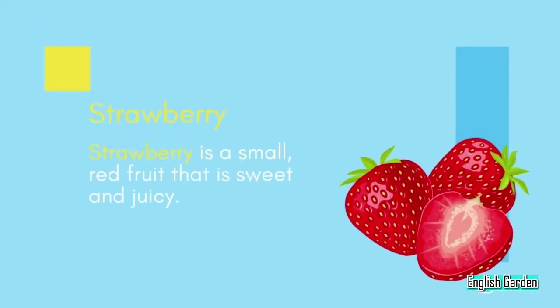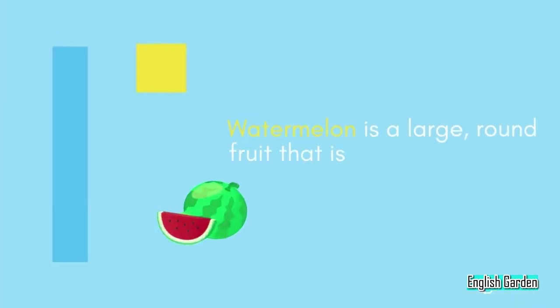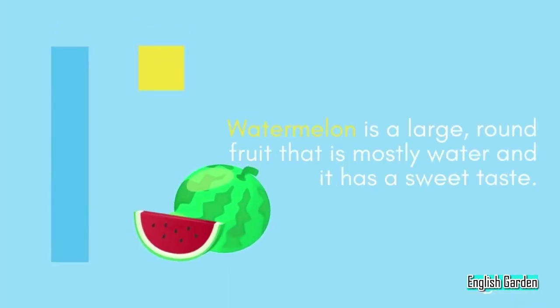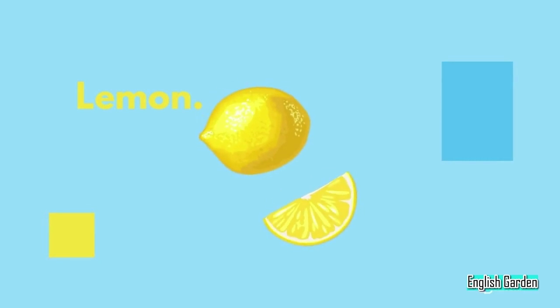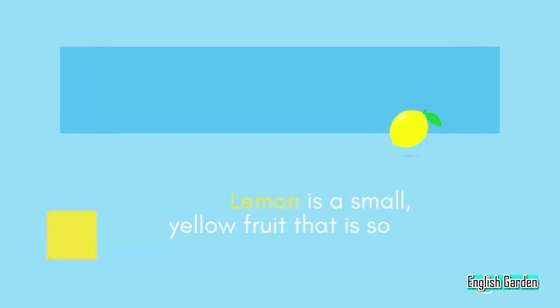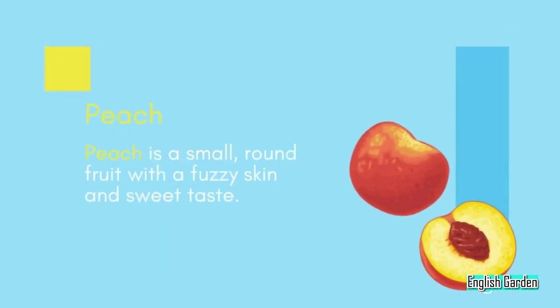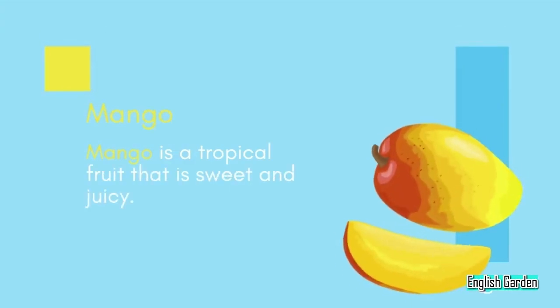Strawberry: a small red fruit that is sweet and juicy. Watermelon: a large round fruit that is mostly water and has a sweet taste. Lemon: a small yellow fruit that is sour in taste. Peach: a small round fruit with a fuzzy skin and sweet taste. Mango: a tropical fruit that is sweet and juicy.